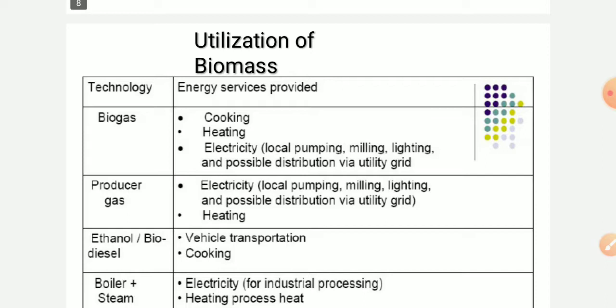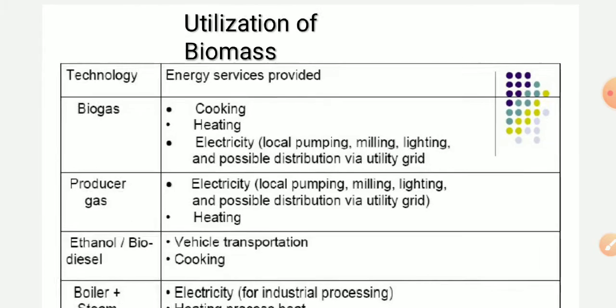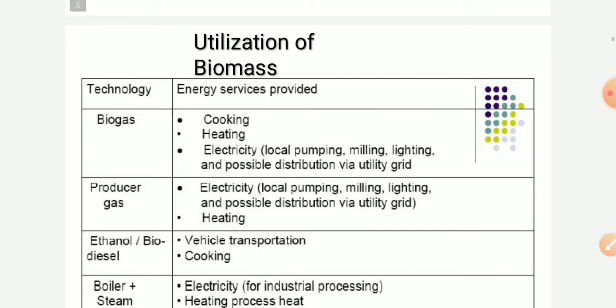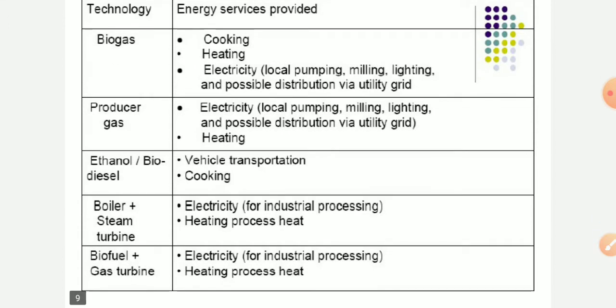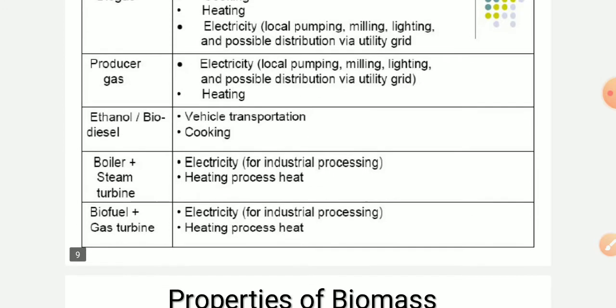The utilization of biomass covers various technologies. Energy from biomass can be used for cooking, producing gas and oil. Biomass can be converted to producer gas, electricity, heating, ethanol, biogas for vehicle fuel, and used in boilers, steam turbines, and biofuel gas turbines.